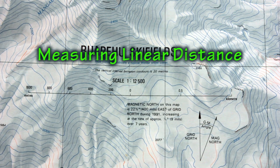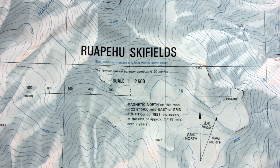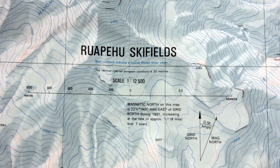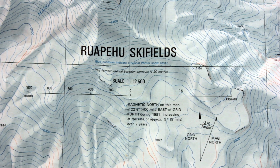We can also use the scale of a map to measure distance. I have a topographic map here of Ruapehu ski fields with a scale of 1 to 12,500. There's also a scale bar on this map.